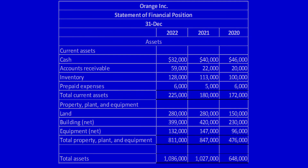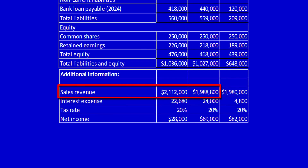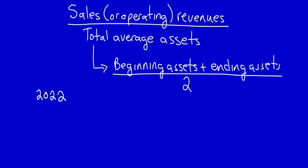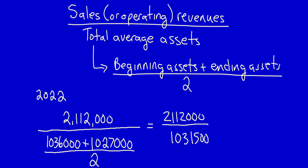Let's look at the sales. In the additional information, I see the sales revenue. Let's do the calculations. I'm going to take the sales revenue for 2022 and divide it by the total average assets: 2,112,000 divided by 1,031,500 equals $2.05.